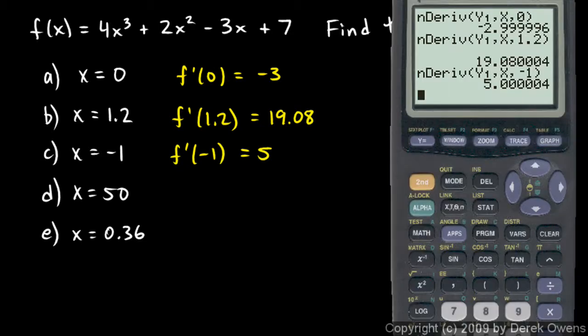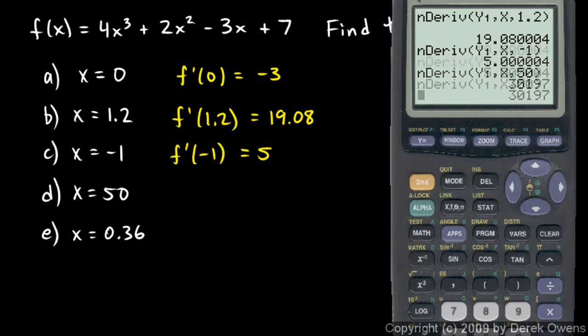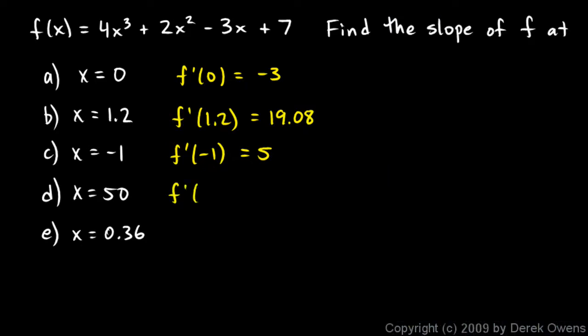Now, x equals 50, so do the same thing, second entry, and back up here and type in 50. Look at that, 30,197. F prime of 50 is 30,197. Now is that reasonable? This number is huge compared to the other numbers that we were getting.